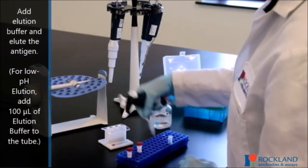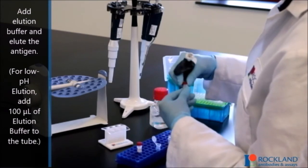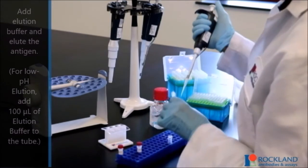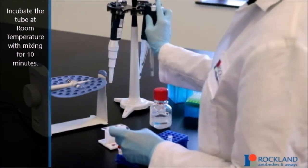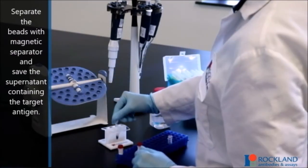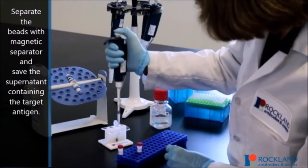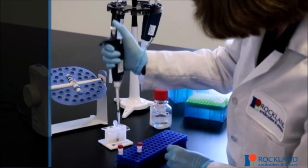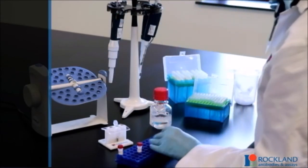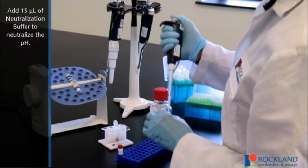Add elution buffer and elute the antigen. For low pH elution, add 100 microliters of elution buffer to the tube. Incubate the tube at room temperature with mixing for 10 minutes. Separate the beads with magnetic separator and save the supernatant containing the target antigen. Add 15 microliters of neutralization buffer to neutralize the pH.